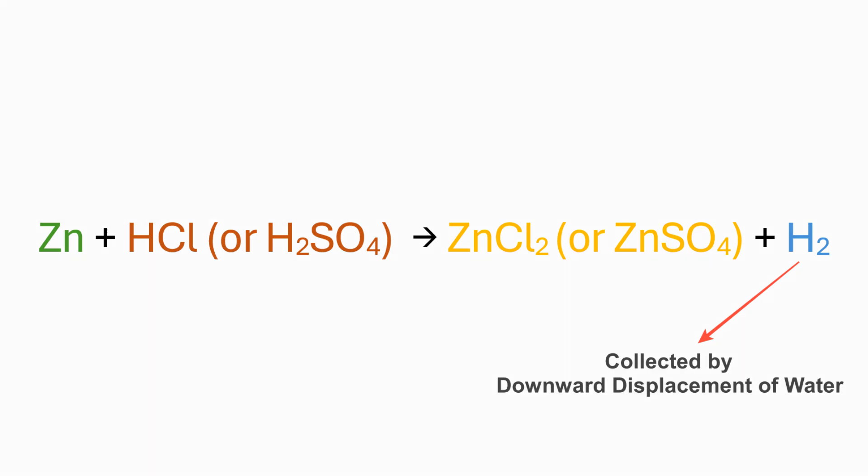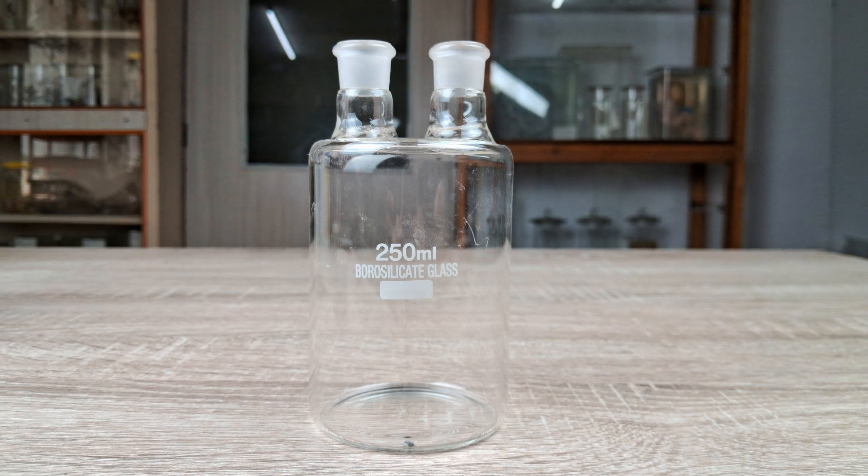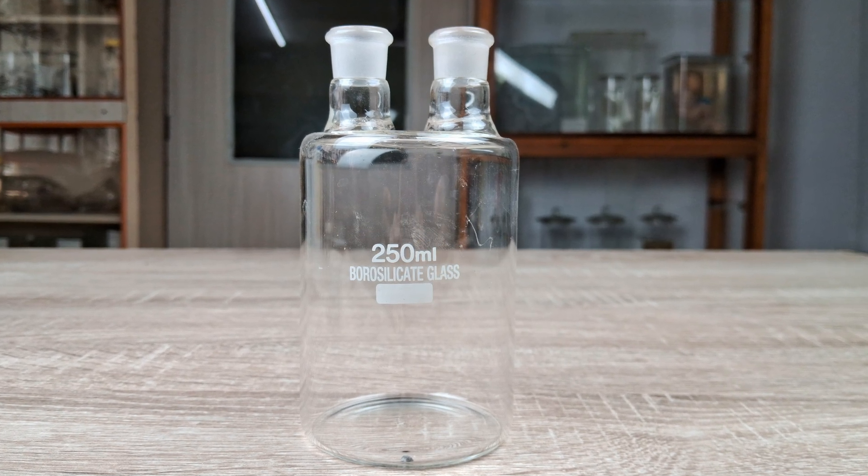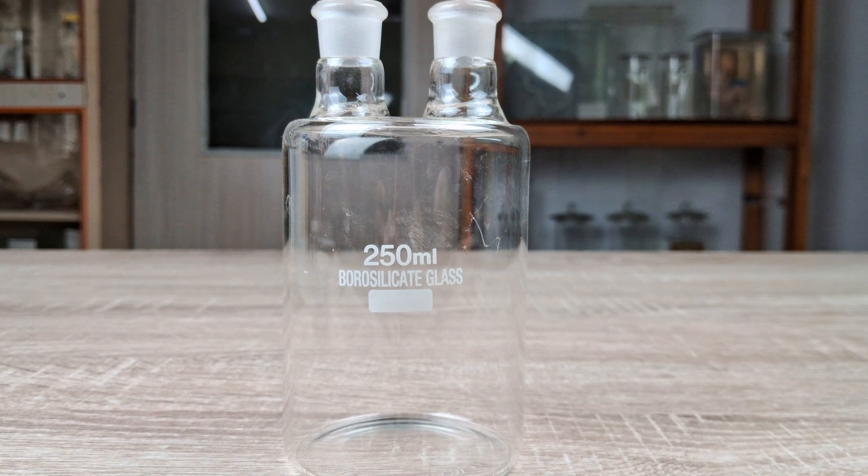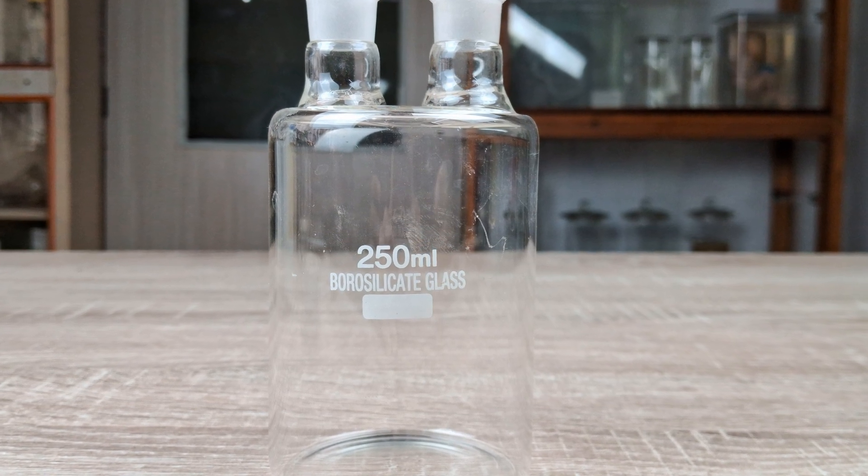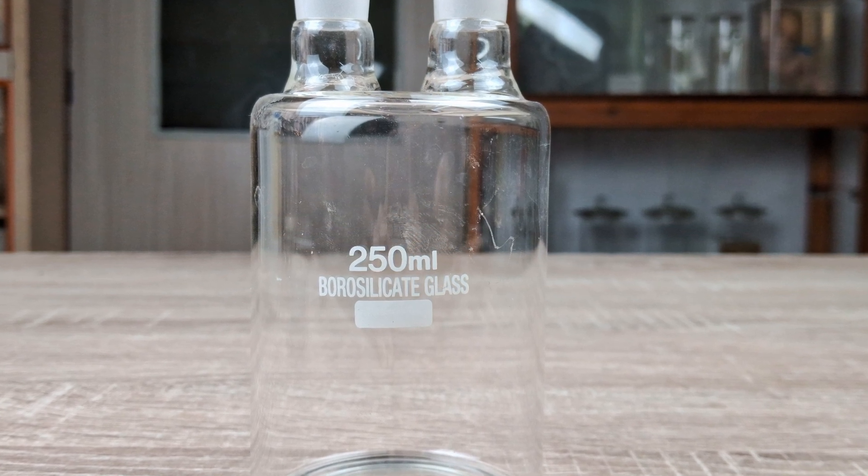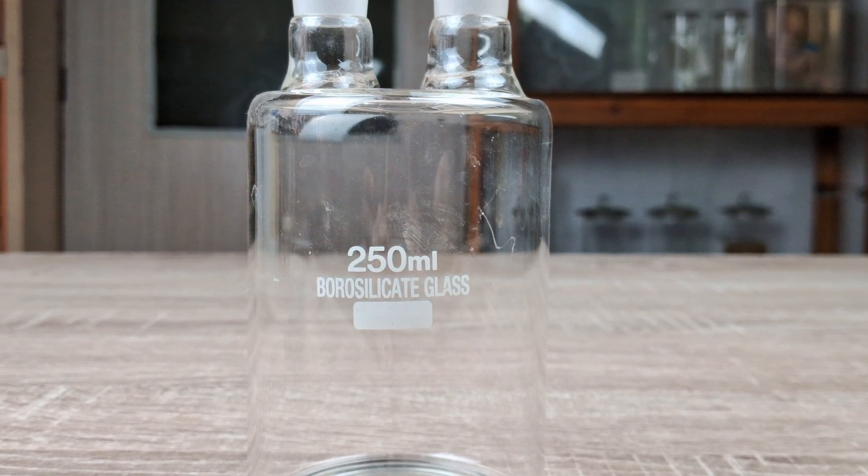To perform this experiment, you'll need the following: a Wolf bottle or a 250 mL round bottom flask or a 250 mL Erlenmeyer flask. For this experiment, I'll be using a Wolf bottle, which is the most common glassware depicted in textbook diagrams for the reaction of zinc with an acid.